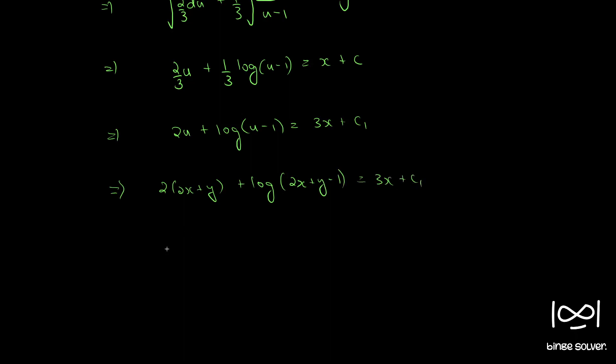Rearranging, we get 4x - 3x + 2y + log|2x + y - 1| = c, which gives x + 2y + log|2x + y - 1| = c.